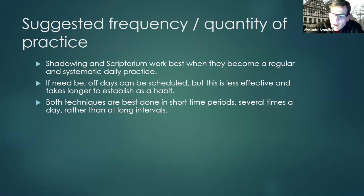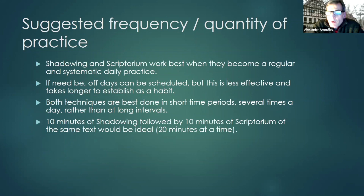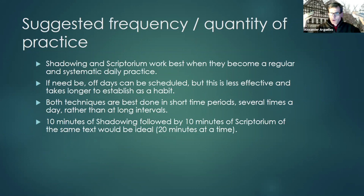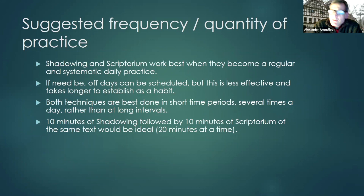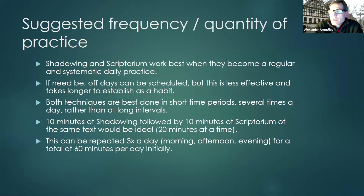A good suggestion would be 10 minutes of shadowing followed by 10 minutes of scriptorium on the same text — a 20-minute study session. You'd listen to the audio, speak along with it, then take that same text and read and write from it. To get maximum benefit, I'd say do a total of one hour per day by doing this three times: 20 minutes in the morning, 20 minutes in the afternoon, 20 minutes in the evening. That's 60 minutes. If you can only do 20 minutes, that's fine, but you won't make as much progress.